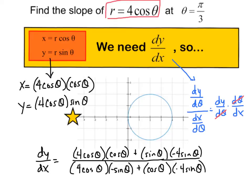Now what I would do is plug in pi over 3. So I'd plug that in for every single spot: 4 times the cosine of pi over 3 multiplied by the cosine of pi over 3, plus the sine of pi over 3 times negative 4 times the sine of pi over 3, and so on. And I'm going to rely on the fact that you could do that either by hand or on your calculator. But this is how you would find the slope at pi over 3.